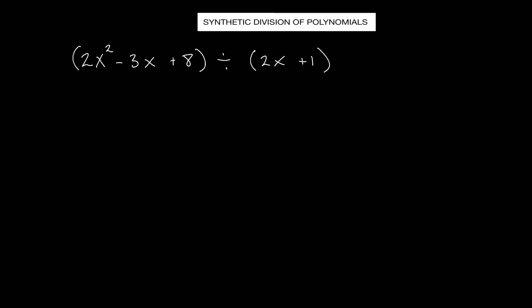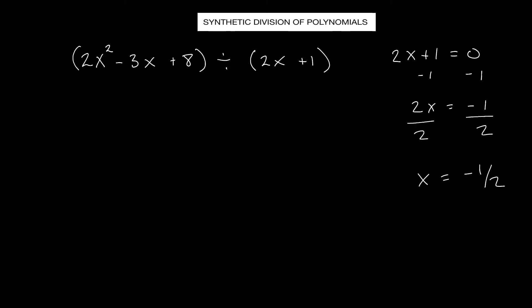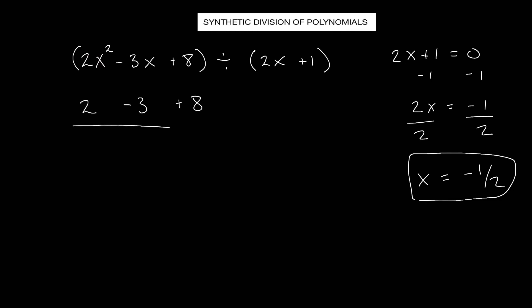Next problem: we're going to take this divisor and put it equal to 0. So we have 2x plus 1 equals 0. Subtracting 1 from both sides, we have 2x equals negative 1. Dividing both sides by 2, we get x equals negative 1 half. This is what we're going to use for our divisor. Now we simply take these coefficients and write them out: 2, negative 3, positive 8. Then put the divisor here: negative 1 half.